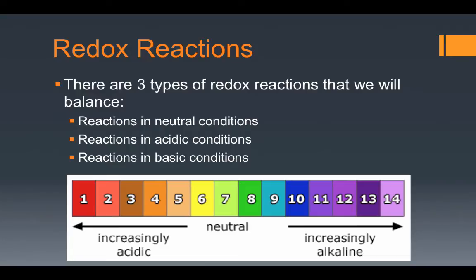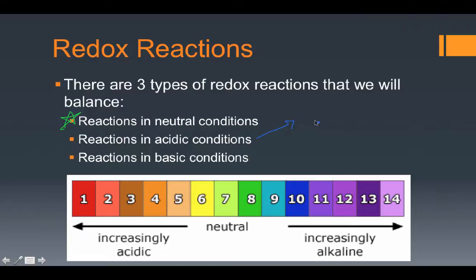There are three types of redox reactions we will be responsible for balancing — reactions in neutral conditions, which this video focuses on, and the two more challenging ones: reactions in acidic conditions and reactions in basic conditions. Acids are solutions that contain the H⁺ ion in solution, and basic solutions are ones that contain excess OH⁻ ions, the hydroxide ion. As a result, we have either H⁺ ions or OH⁻ ions available to use in the reaction to help in the balancing process.